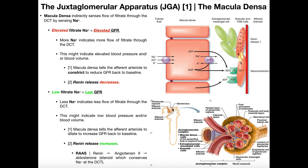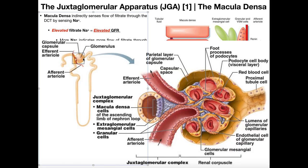All the filtrate has to move from the renal corpuscle — filtrate coming from the capillaries into the capsular space — then goes into the proximal convoluted tubule, into the loop of Henle, and eventually makes its way to the part of the DCT where we have the macula densa cells. So what would cause there to be a lot of sodium in this area near the macula densa cells? Why would there be a lot of sodium here?